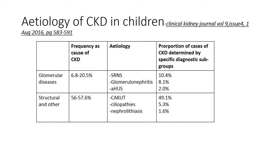The causes of chronic kidney disease in children are different from those in adults. In adults, diabetes and hypertension are the leading causes, but in children the causes differ. Structural abnormalities such as congenital anomalies of the kidney and urinary tract are common, as are ciliopathies — including polycystic kidney disease, either autosomal dominant or recessive. Kidney stones also play a role; for example, in Sudan where it's very hot, renal stones are a more significant cause of CKD in children.